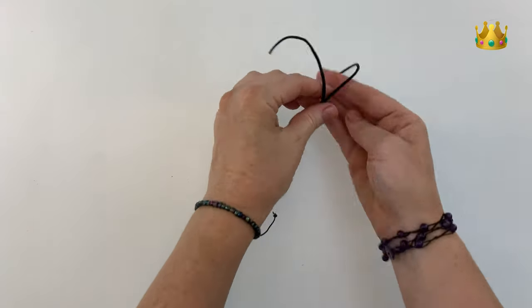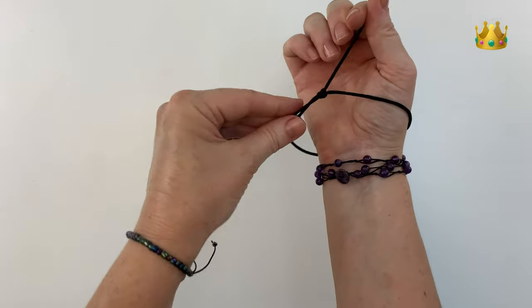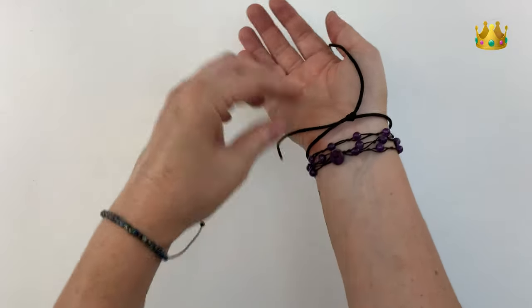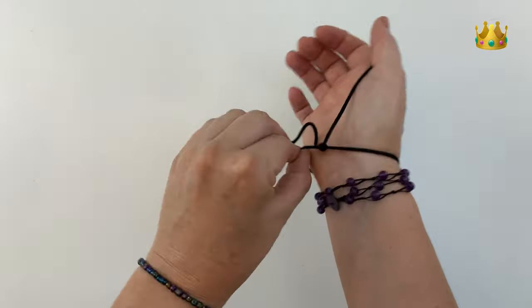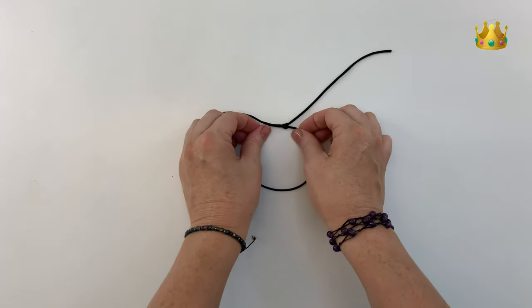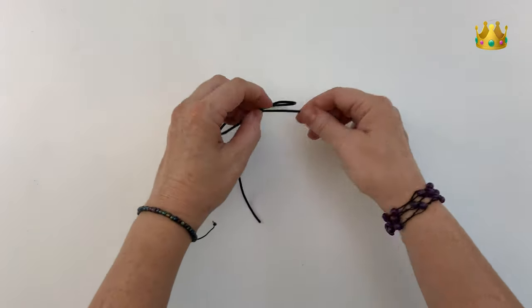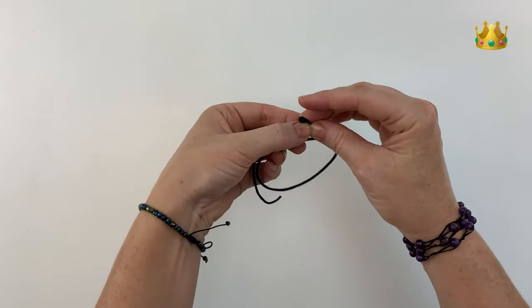Now all you need to do is check your bracelet for size and tie some little stopper knots on the ends of your cords so that they don't disappear inside the knot. So if you extend your bracelet and place it on, you'll find the maximum size you need your bracelet to be to fit over your hand.